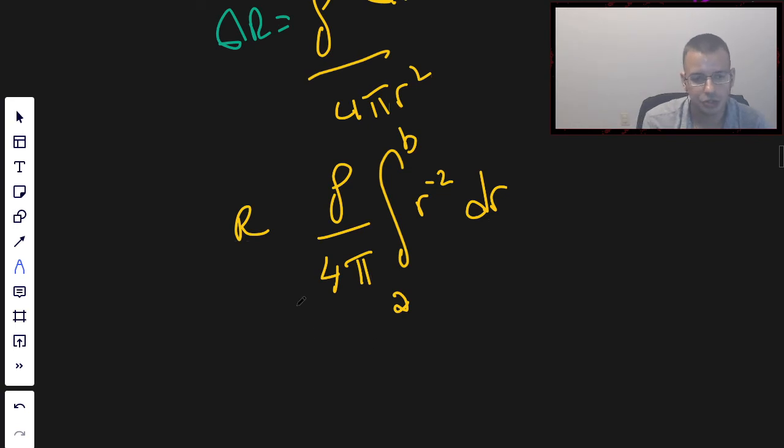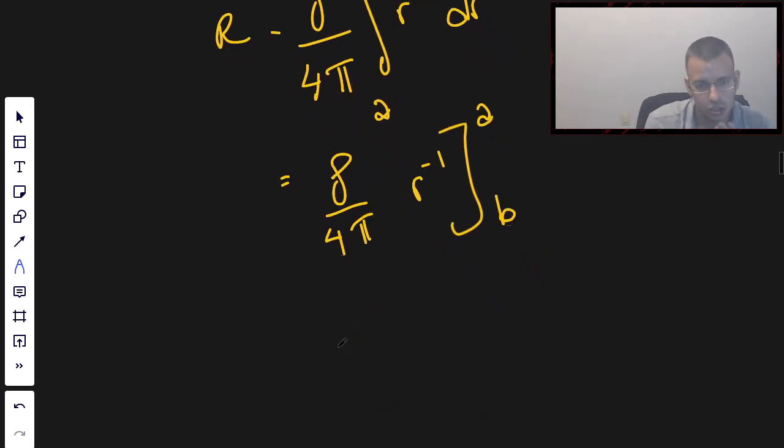So, the integral of R to the negative 2nd is negative 1, R to the negative 1. So, this becomes ρ over 4π, R to the negative 1. And they're supposed to be negative there, but I'm just going to flip the limits of integration as one is wont to do.